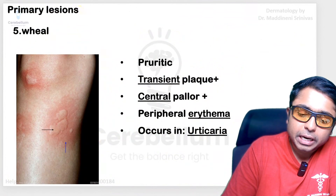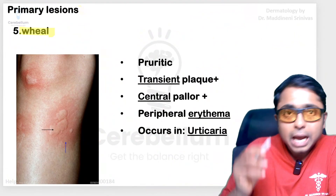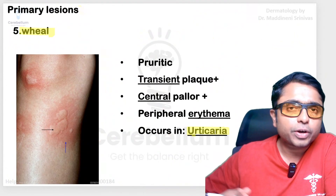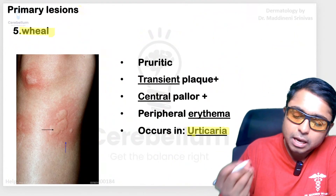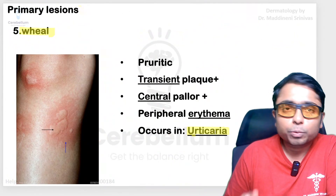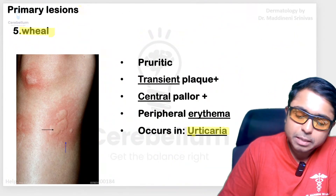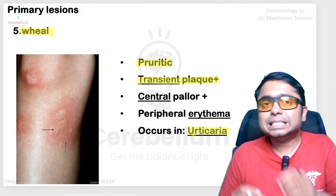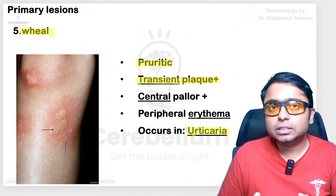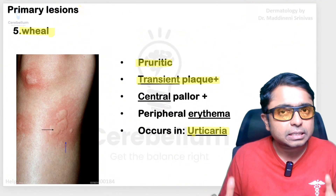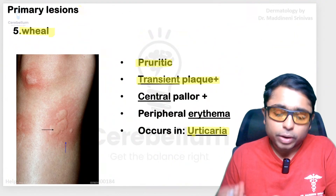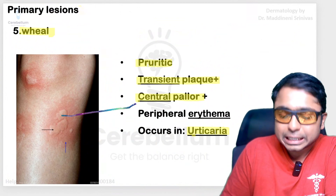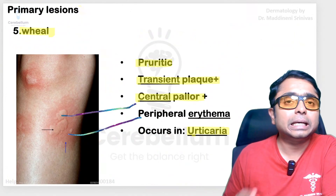Next is a primary lesion called a wheal, classically seen in urticaria, where there is mast cell degranulation leading to histamine release, which ultimately produces the wheal. It is itchy in nature and is a transient lesion — it stays for only less than 24 hours. It is going to have a central pallor and a peripheral erythema, as you are able to see here.